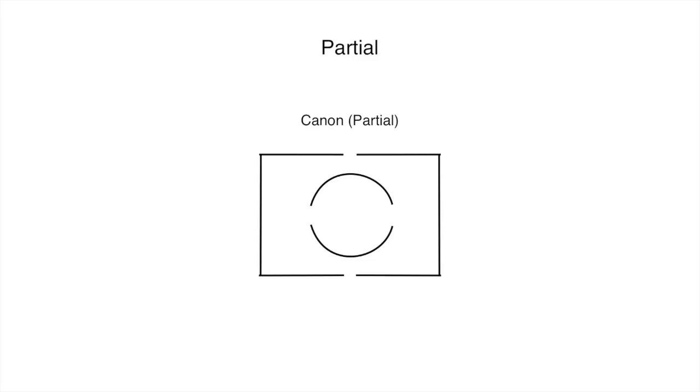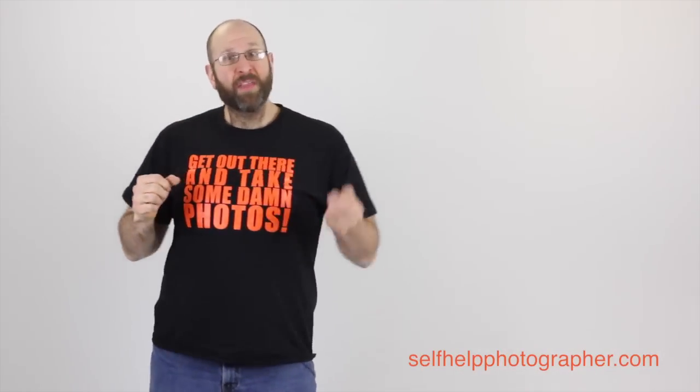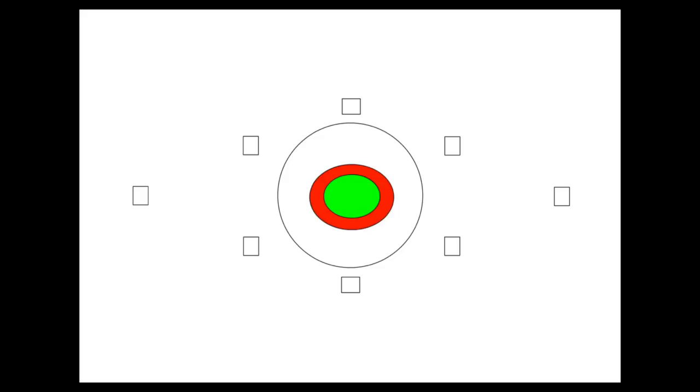The next mode is partial metering, which like spot metering is not available on all cameras. If you don't have spot metering you most likely have partial metering, and vice versa. Spot metering and partial metering are basically identical — the only difference is the size of the area looked at. With spot metering the area is between 1% and 5% of the entire scene; with partial metering the area is between 10% and 15% of the entire scene. It's a slightly larger area but still gives you a very precise reading off of a specific area in your photo.